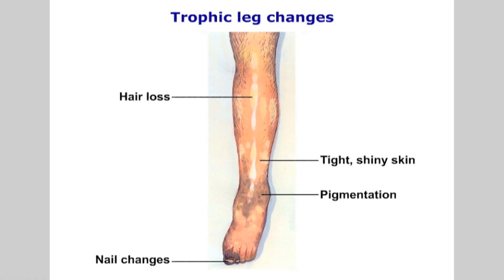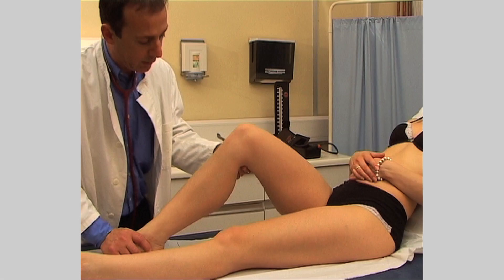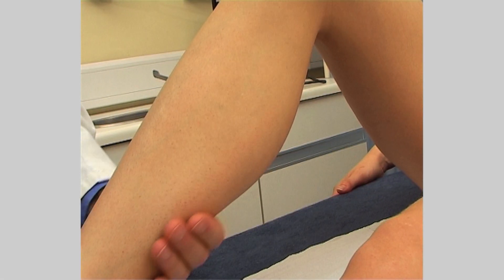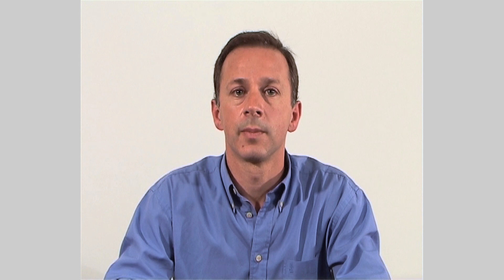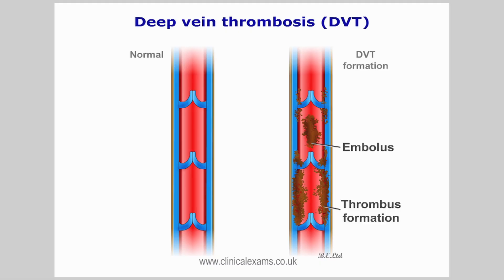Compare your findings with trophic changes of the skin and the temperature of the legs. Now assess the venous drainage. Note the presence of varicose veins. Deep vein thrombosis, or DVTs, are not uncommon.